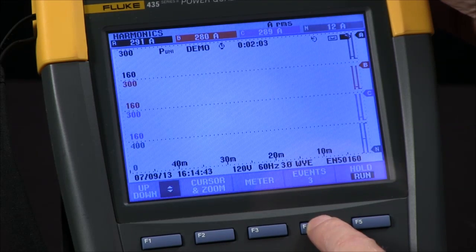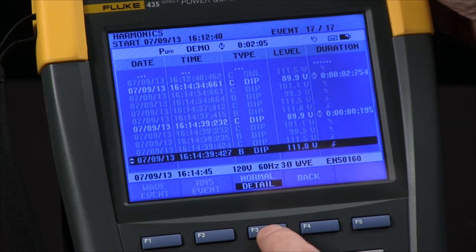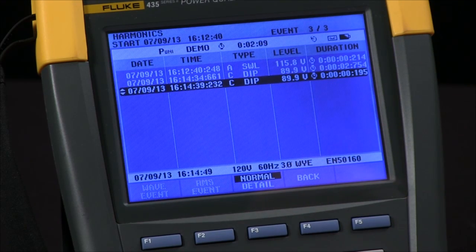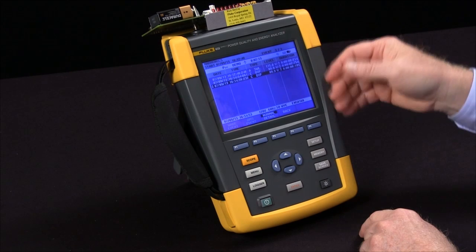If I hit the events key and come to see normal, you'll see I had a few dips and swells occur during the test. So even during harmonics testing, I see other types of voltage events.